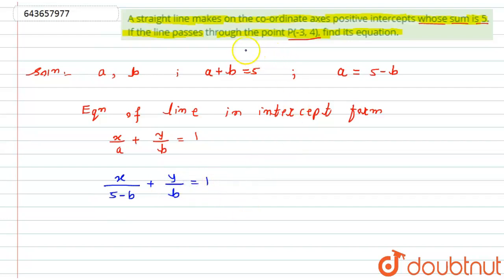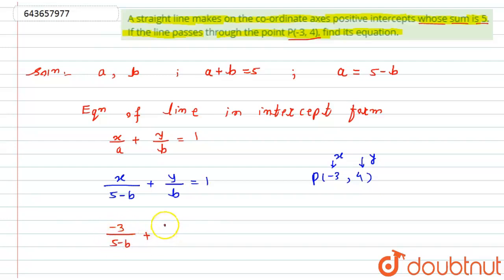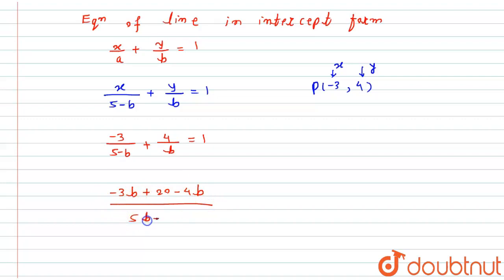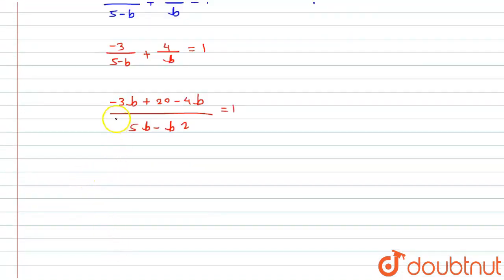Since the line passes through point P(-3, 4), I put x = -3 and y = 4 to get the values of a and b. Substituting: -3/(5 - b) + 4/b = 1. Taking the common denominator, the numerator becomes -3b + 4(5 - b), which is -3b - 4b = -7b, over 5b - b²  = 1.